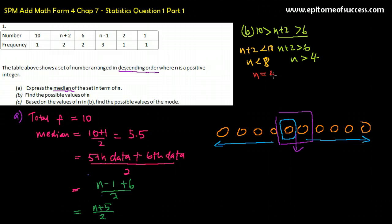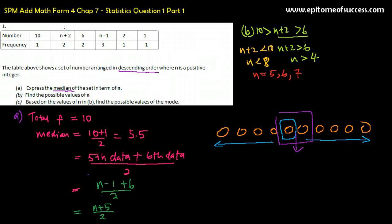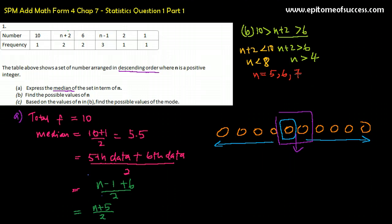So N must be 5, 6, or 7. We now have the value of N for this condition. But that is only for this one side. There is another N expression here, and to find the possible values of N, it must fulfill both sides — not just this one. In order to fulfill the condition between 10 and 6, N can be 5, 6, or 7. But it might not fulfill the other condition.